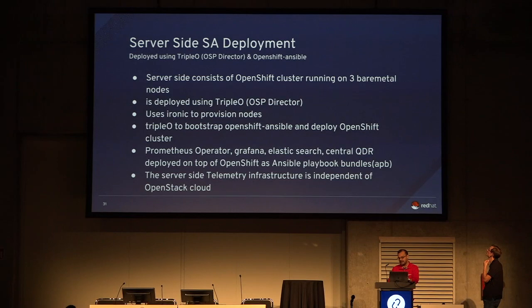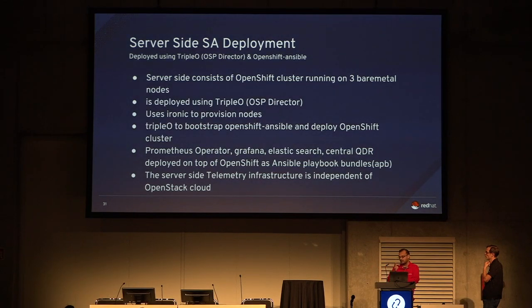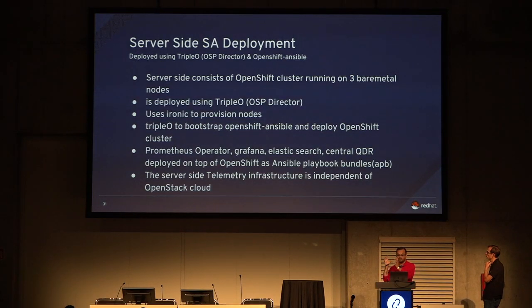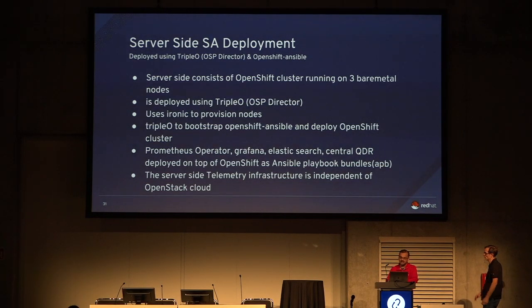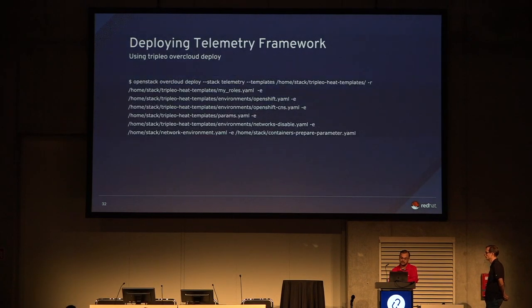On the server side — which is a Kubernetes cluster, specifically an OpenShift cluster running on three bare metal nodes — we created the OpenStack cloud as one Heat stack. Then using TripleO, we deploy the server side, which is an OpenShift cluster running alongside OpenStack as a separate Heat stack. It's not on top of OpenStack — it runs next to it. Then we do the bootstrapping and run the Prometheus operator, Grafana, and all that on top.